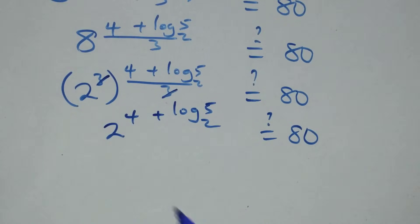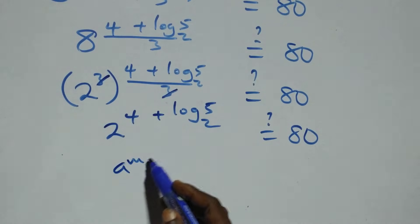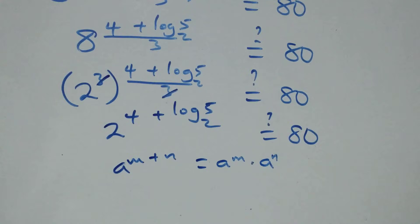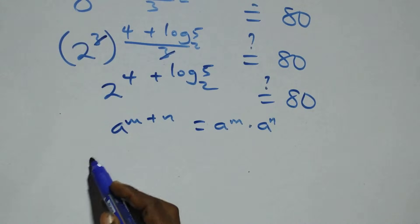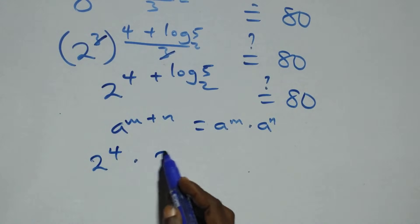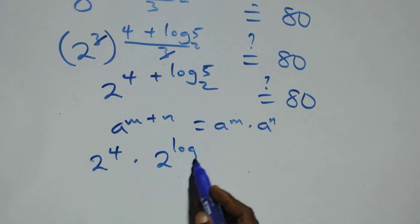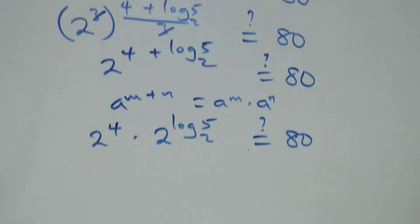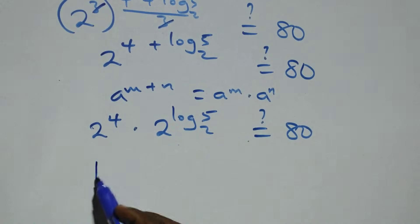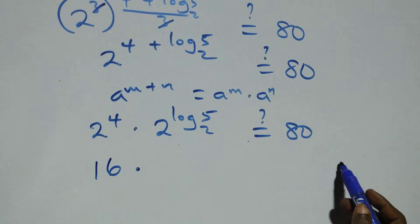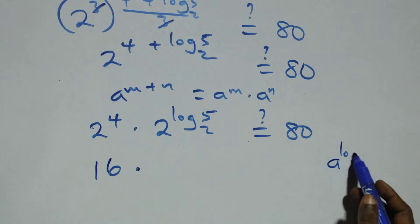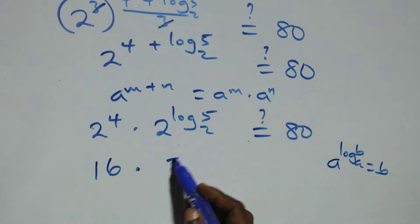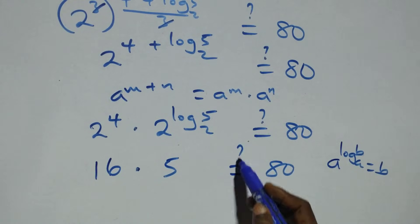Applying the log of indices rule — a raised to power (n plus n) is the same as a raised to power n times a raised to power n — we have 2 raised to power 4 times 2 raised to power log₂5, which should equal 80. Now 2 raised to power 4 is 16. And using the rule that a raised to power log base a of b equals b, we have 2 raised to power log₂5 equals 5. So we have 16 times 5, which equals 80.